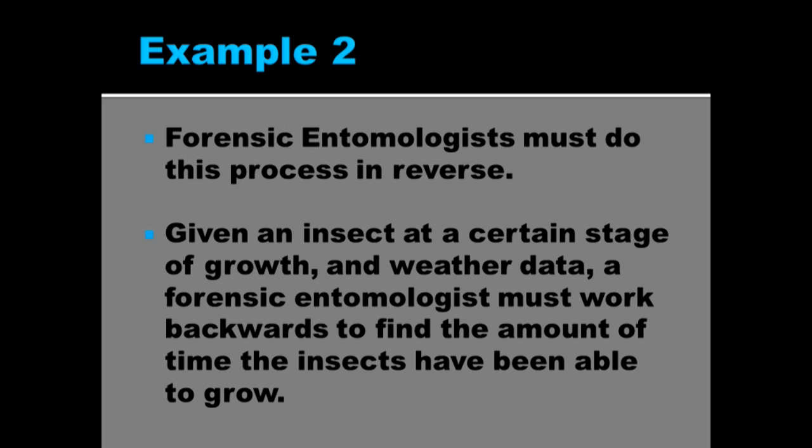We're given the bug. We know the threshold temperature. And we know the temperature of the conditions it was in. But we don't know how long the bug has been there. So we need to do this process in reverse. So forensic entomologists typically will be given the information of a certain stage of growth, weather information, and the threshold temperatures, which have been tested in a lab.